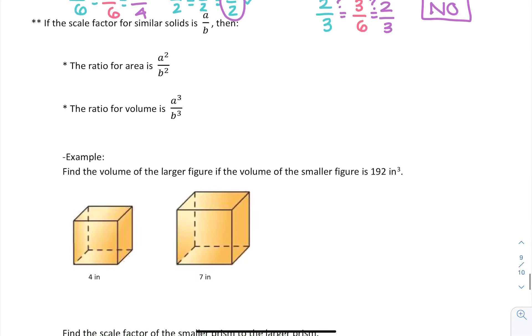If we know the scale factor for similar solids is A over B, then we're able to figure out the ratio of the area and the volume. This A over B is going to be our similarity or perimeter ratio. It's the ratio of the sides or the ratio of the perimeter.